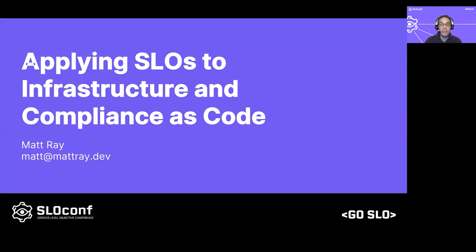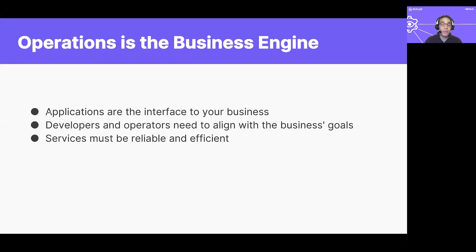Today I'm going to talk to you about applying SLOs to infrastructure and compliance as code. Management teams are focused on reaching their business targets, but operations is the engine that helps the organization achieve their goals. Applications are the interface the customers have with your business — it doesn't matter if you're running a SaaS or a real estate company. Software defines the interactions we have with our users. Developers and operators need to align with the business's goals. Above all, services must be reliable and efficient because software defines our relationship with customers. If it's unreliable or hard to use, the business is considered the same.